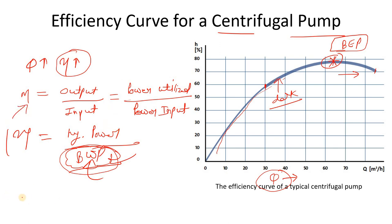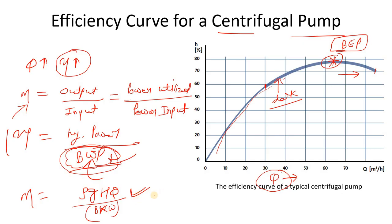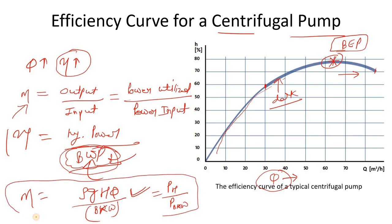The formula for pump efficiency is: η = (ρ × g × H × Q) / BKW, which can also be written as P_hydraulic / P_BKW. If you want to know more about this, please watch the pump power video for a deeper understanding of what power means in this context.